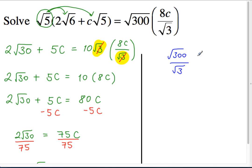And then times 8c. We haven't changed the value of the problem, but we can now take the root 300 divided by root 3 and turn that into root of 100 times 8c. And that gives us the 80c, or 10 times 8c.